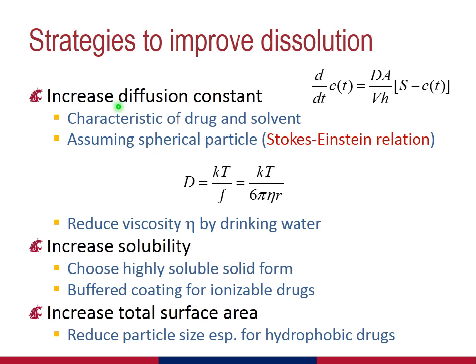First, we will consider the diffusion constant D. Generally speaking, the diffusion constant is characteristic of the drug and solvent combination. There is unlikely very much we can do with respect to the drug itself, because we are fixed in what we would like to dissolve from the dosage form. However, we can modify the characteristic of the solvent in one important way.